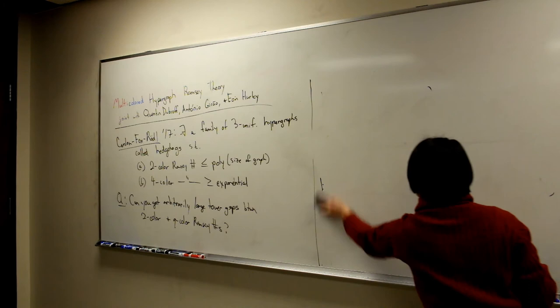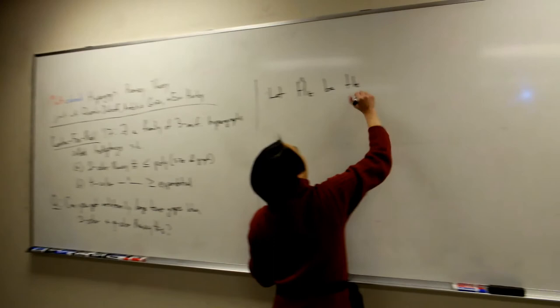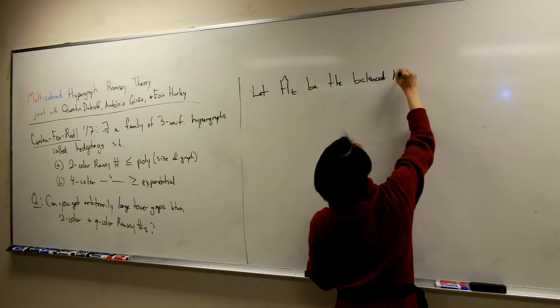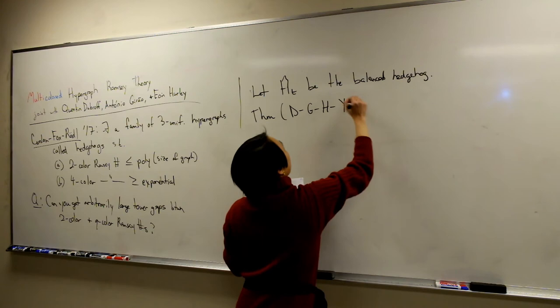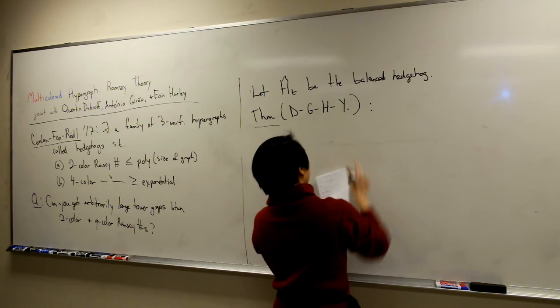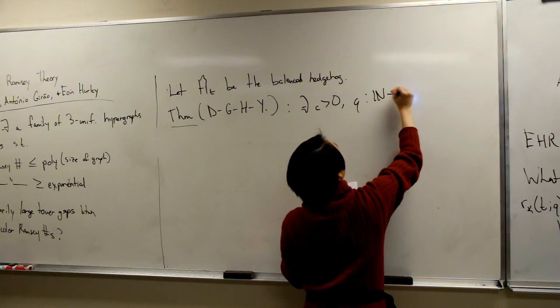We do this by taking a generalization of their construction that we call balanced hedgehogs. We let H-hat(t) be the balanced hedgehog — that's because H(t) without the hat is just a hedgehog. Our theorem states: we can find some constant and some function Q (depending only on uniformity) such that for all K and T large enough, our two-color Ramsey number of the hedgehog is at most a polynomial in T.